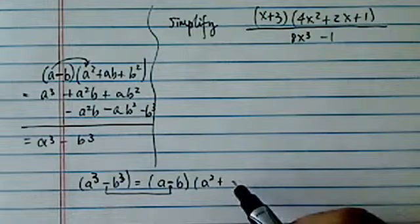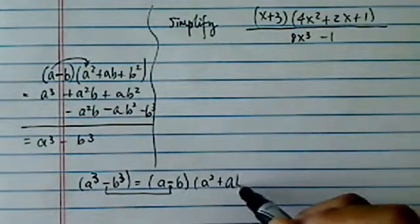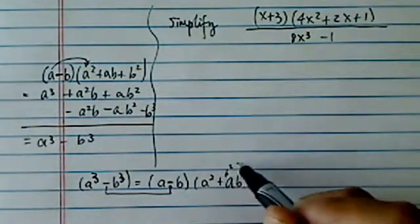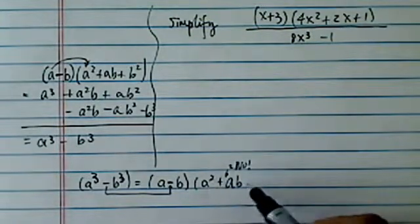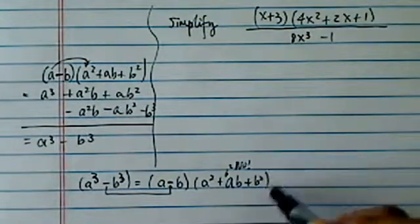There's no coefficient of two. No, no two, okay. Just a squared plus ab plus b squared.